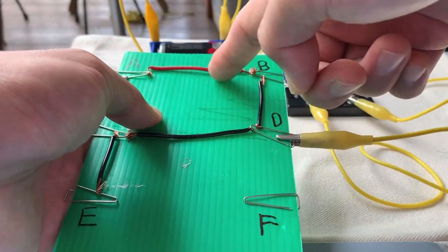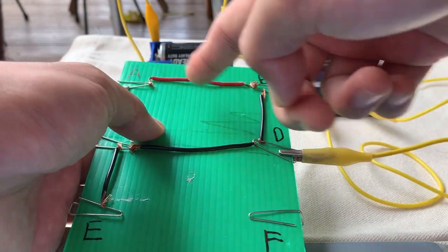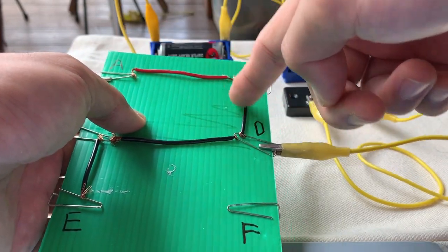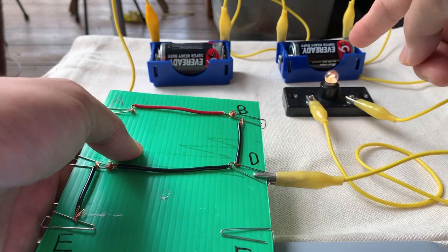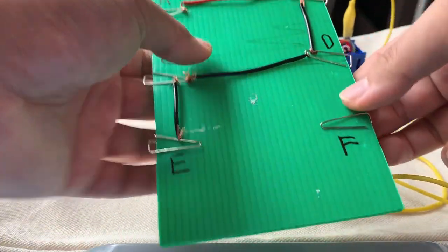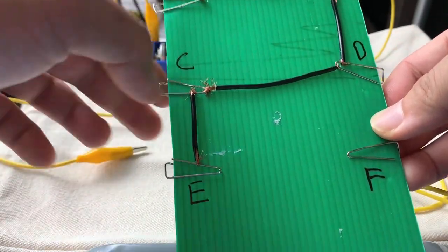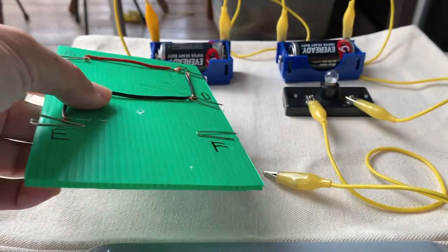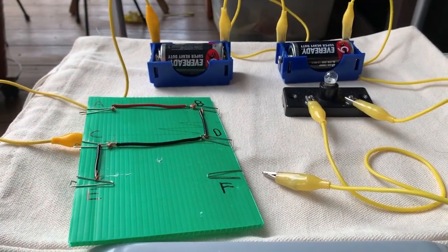So electricity is able to flow through this wire and this wire such that it's a closed circuit and the bulb lights up. This is all about the circuit card and the circuit tester. See you later. Bye.